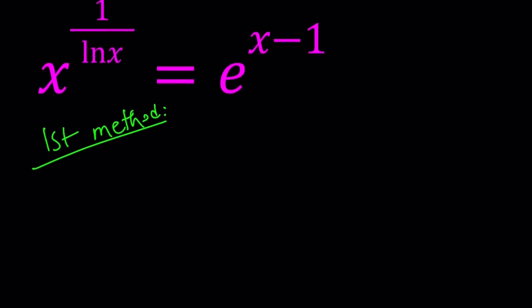For my first method I'm going to do the following. Since I have 1 over ln x as an exponent, it makes sense to raise both sides to the power ln x so we can get rid of the 1 over ln x. So here's what I do. x to the power 1 over ln x raised to the power ln x and I do the same thing on the right hand side.